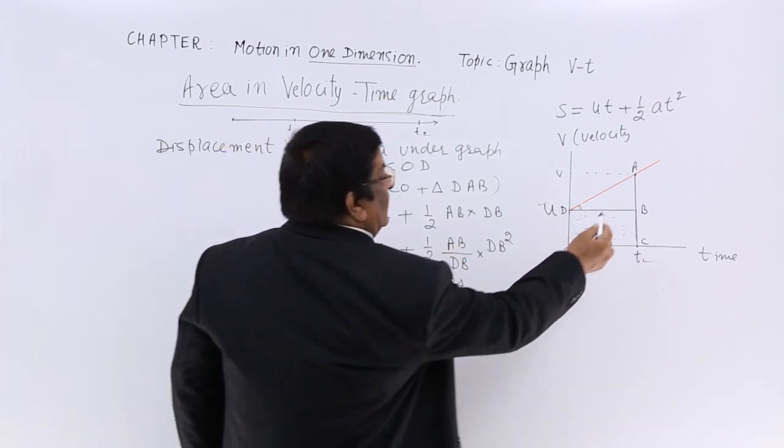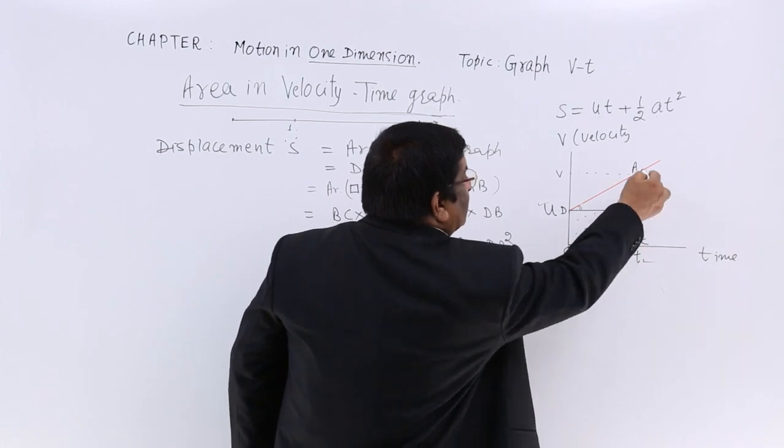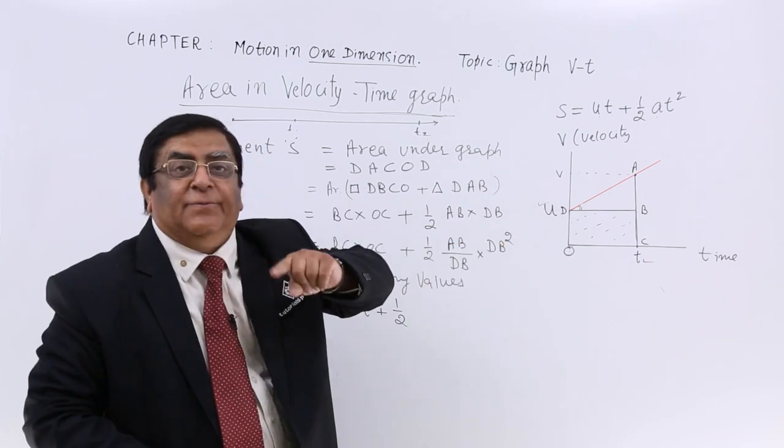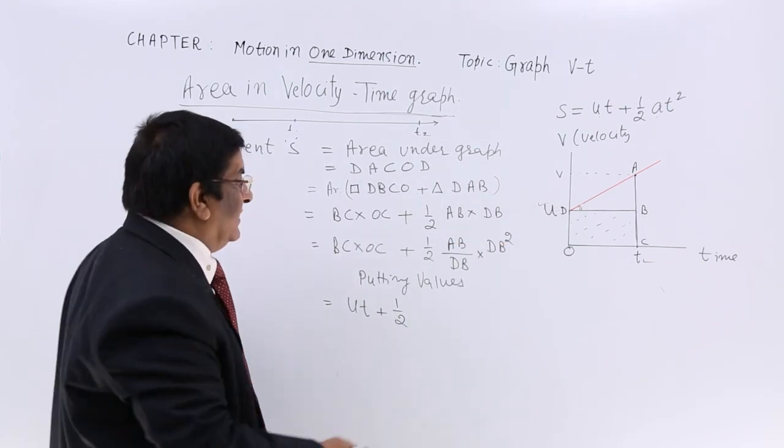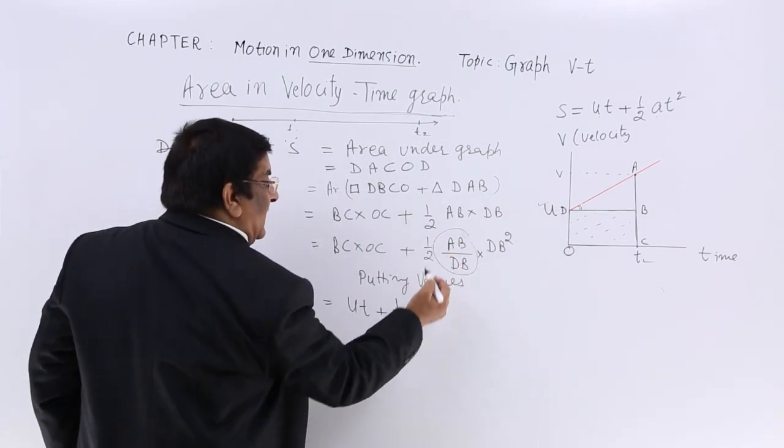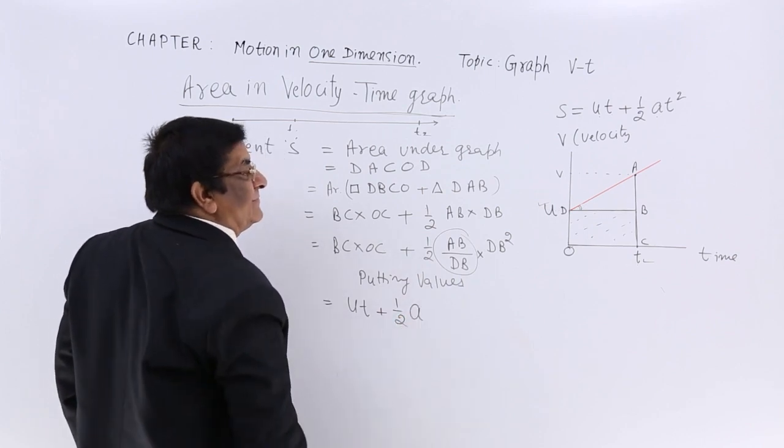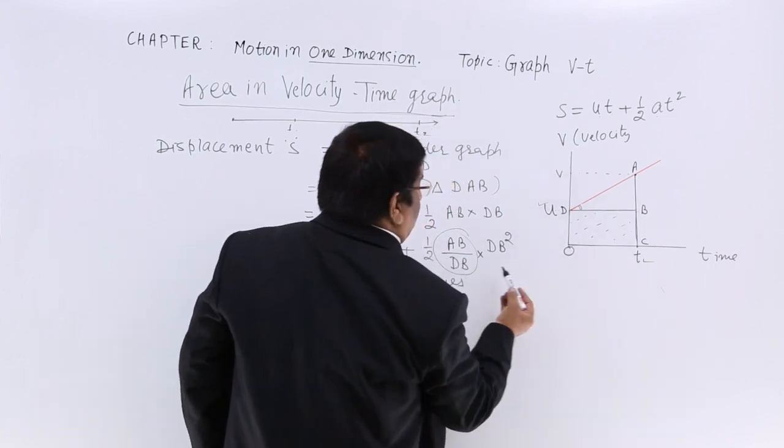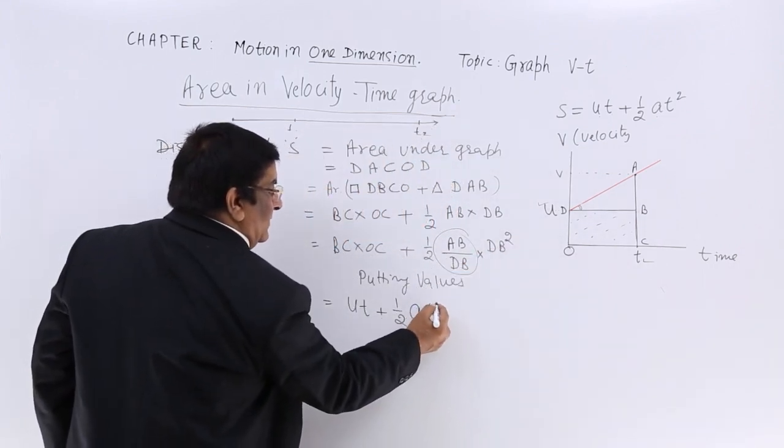AB upon DB is the slope of this line and slope always gives - in VT graph slope gives what? Acceleration. So this I can write as acceleration. DB - DB is time square, a times t square.